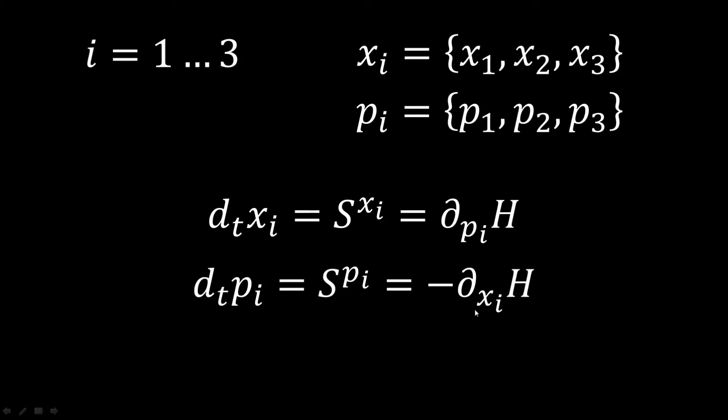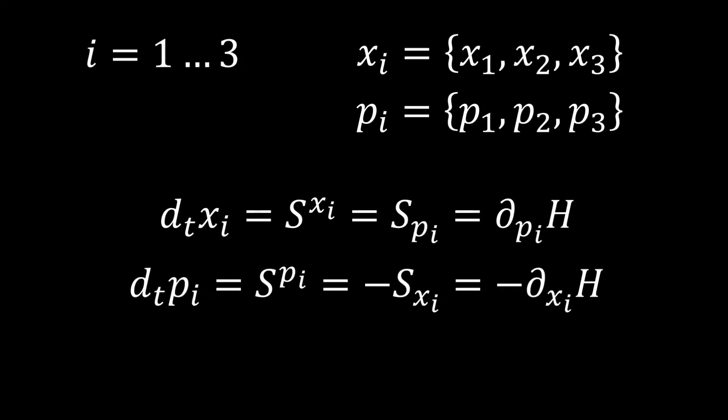So to make it easier to write the equation later, we introduce another way to describe the S vector field. We are going to introduce this lower component. And we will have this relationship that S upper x is going to be equal to S lower p. And S upper p is going to be equal to minus S lower x. And now also on the right side, we have the p matching the p and the x matching the x. So that also this part can be now written in a more general form. What we still need to do is to find another way to write this middle part, the cross relationship.